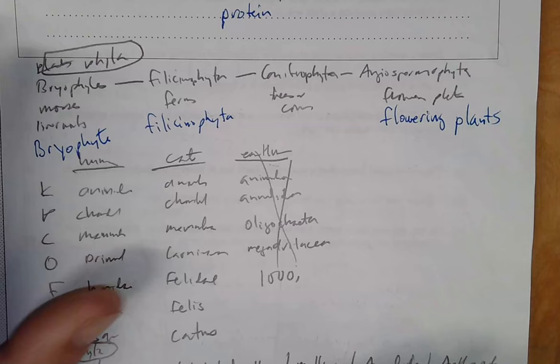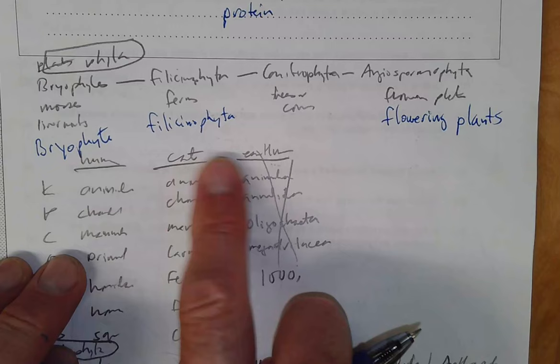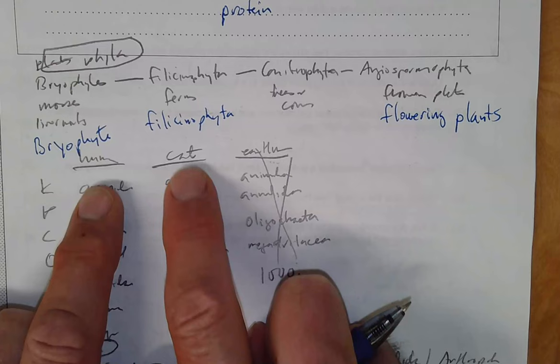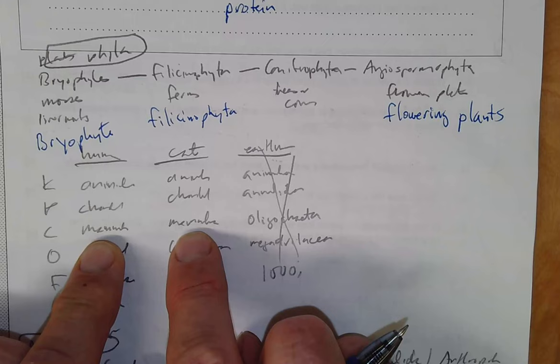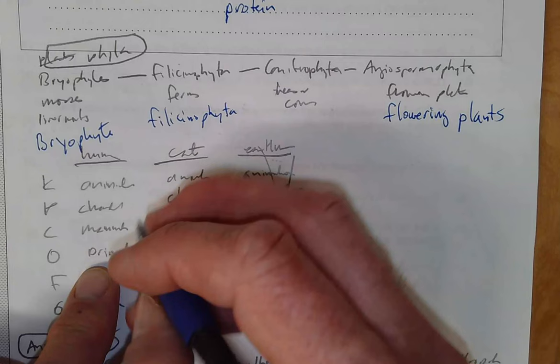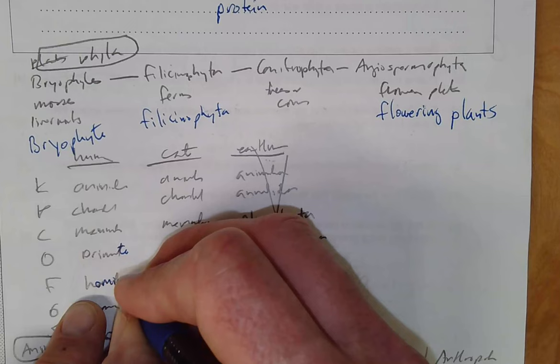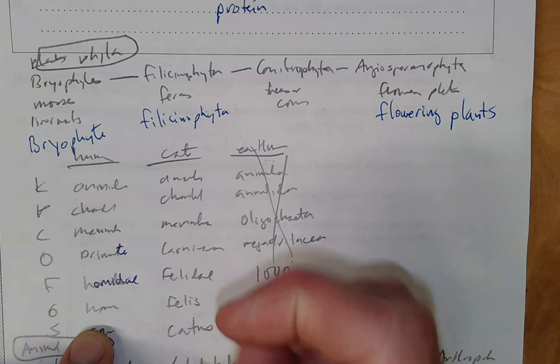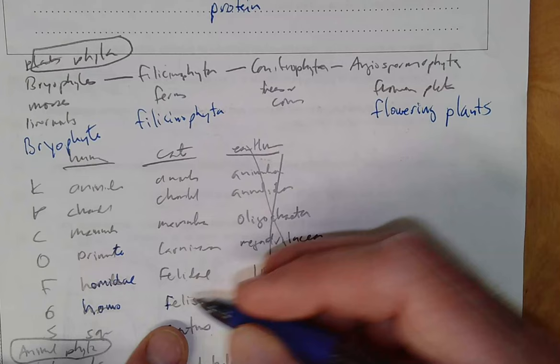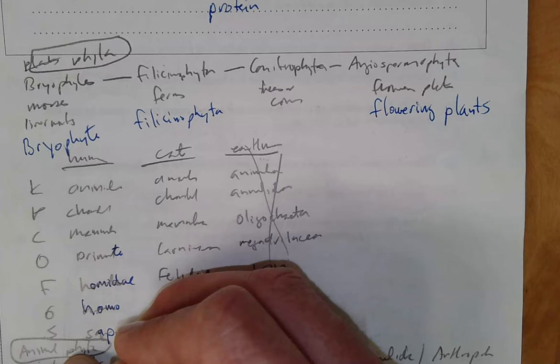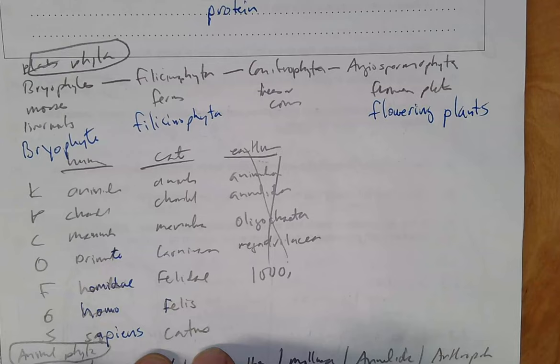And here I put the kingdom, phylum, class, order, family, genus, species for a couple different things. Humans—we're both, in cats, we're both animals, we're both chordates, we're both mammals. But now we're getting different. Our orders: we are primates, order Primate, and cats are Carnivora. And we are Hominidae and cats are Felidae. We are in the genus Homo and cats are in the genus Felis. And we are sapiens, our species, species Homo sapiens. And the house cat is in the catus species.